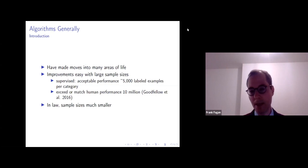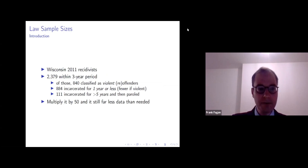Acceptable performance in supervised machine learning approximates about 5,000 labeled examples per category. Now, with unsupervised methods, Goodfellow and his co-authors estimate that we can exceed or match human performance with about 10 million observations. But in law, these sample sizes are much smaller. So for instance, in Wisconsin in 2011, the Department of Corrections there studied the behavior of prisoners that were later released and that recidivated.